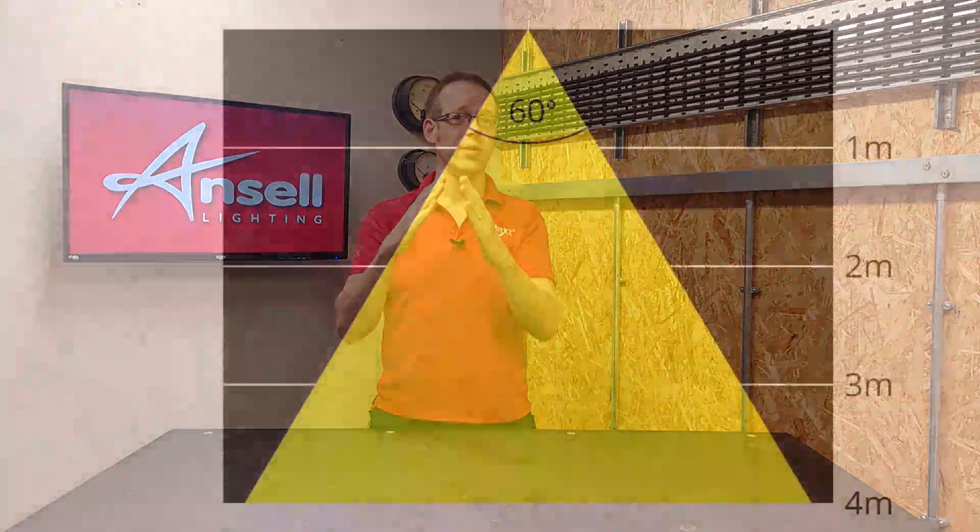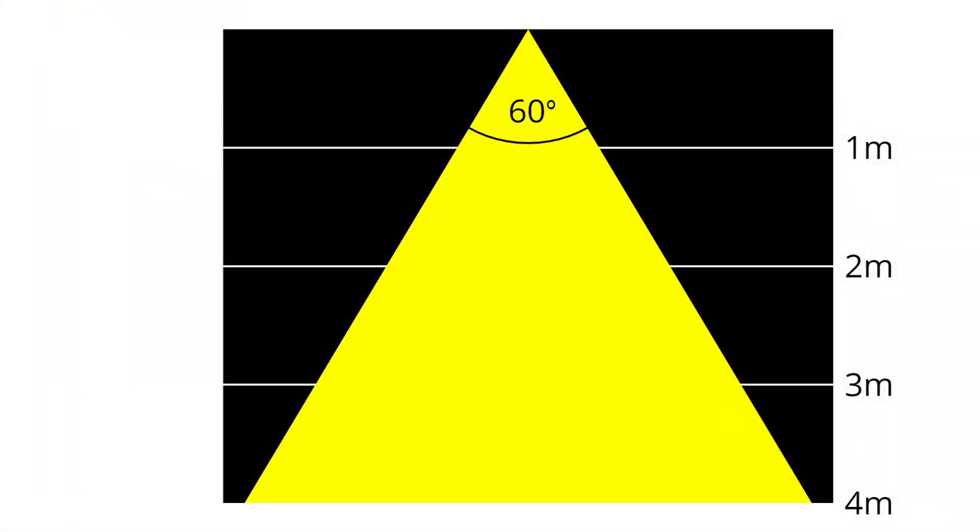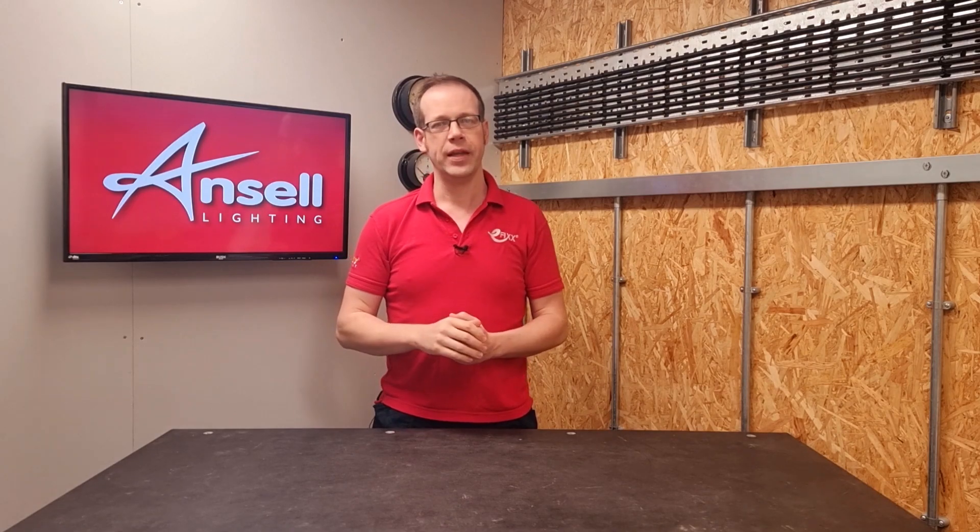It's tempting to think of beam angle as a perfect cone formed by the light from the fitting — pitch black on the outside and fully lit on the inside. This impression is often reinforced by manufacturers who sometimes include a diagram that seems to indicate exactly this. However, light doesn't really conduct itself in such a neat and uniform way, so there's a little more here than meets the eye.